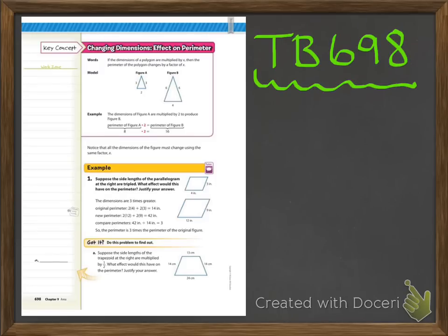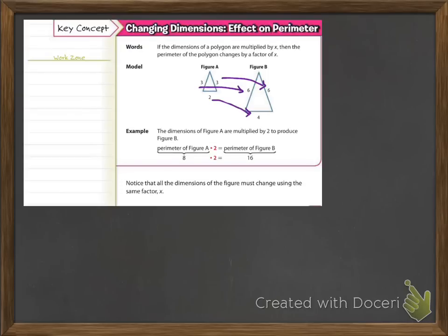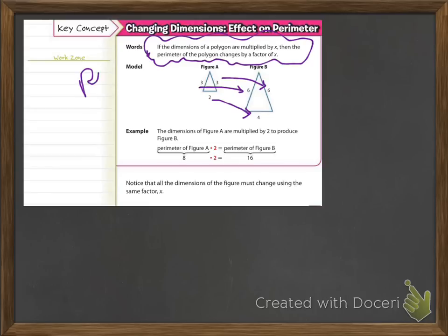Now turn to textbook page 698. You'll see two triangles. At the top it says 'changing dimensions — effect on the perimeter.' When they say changing dimensions, they mean changing the side length. The rule says: if the dimensions of the polygon are multiplied by x, then the perimeter of the polygon changes by a factor of x. This is the important rule — make sure you note it.